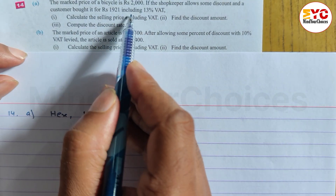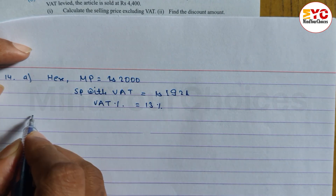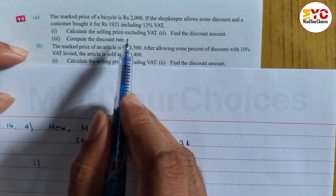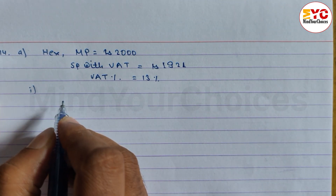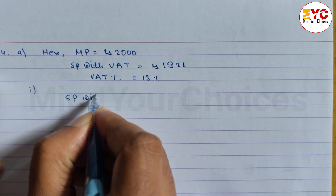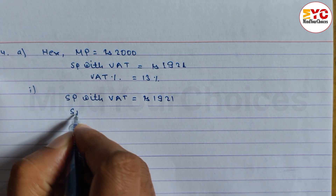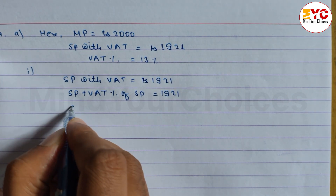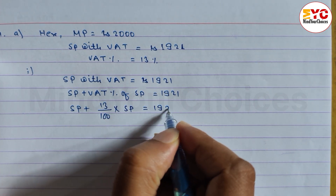SP with VAT = Rs. 1921, and the rate of VAT is 13%. Question number 1: calculate the selling price excluding VAT. We need to find the price without VAT. Using the formula: SP with VAT = SP + VAT percent of SP, so 1921 = SP + 13% of SP.